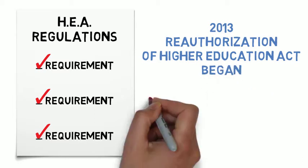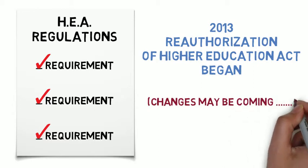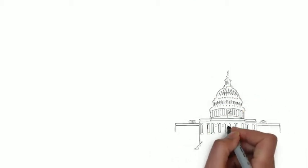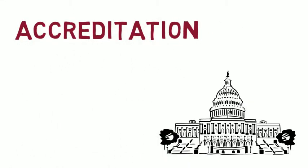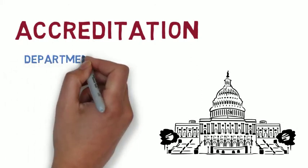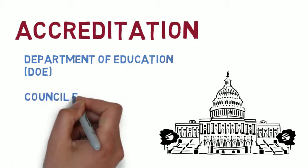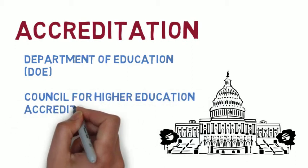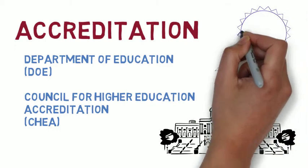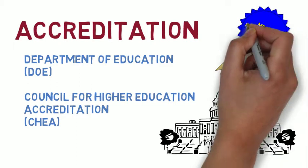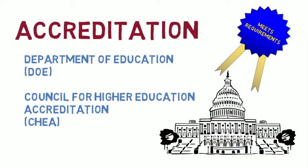In 2013, Congress began the process of reauthorizing the Higher Education Act. As regulations are adjusted, so too are the requirements colleges must follow to receive federal funding. The two main organizations that oversee accreditation in the United States are the Department of Education (DOE) and the Council for Higher Education Accreditation (CHEA). They ensure accrediting agencies set standards, requirements, and policies that follow the Higher Education Act — in short, they accredit accreditors.